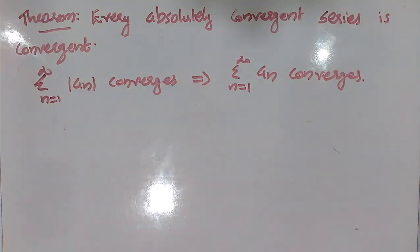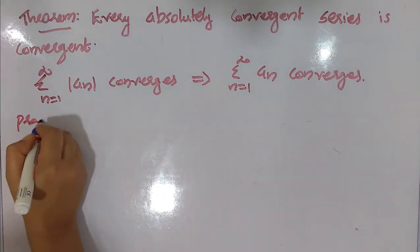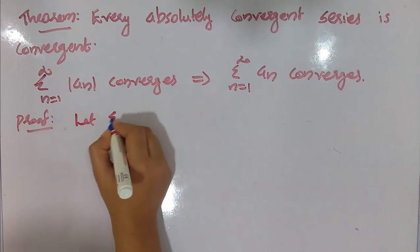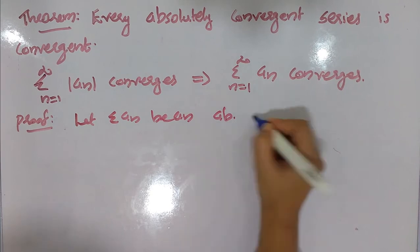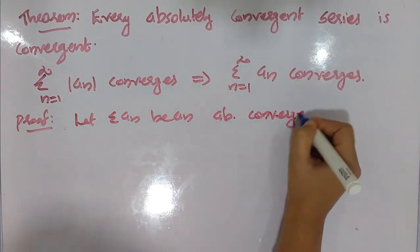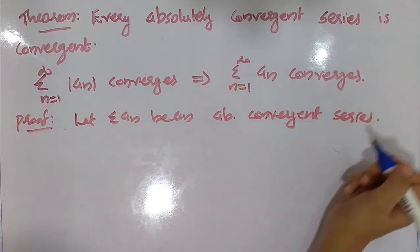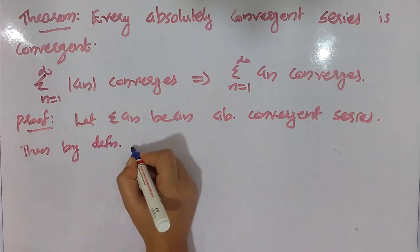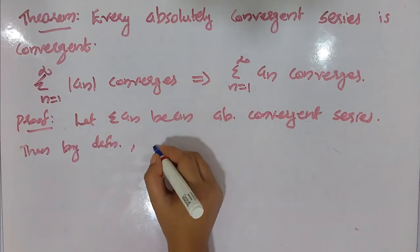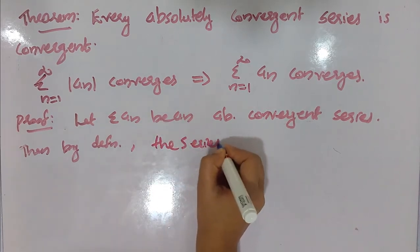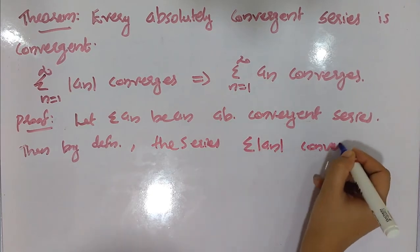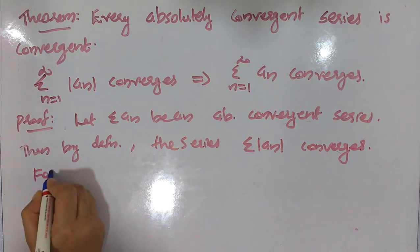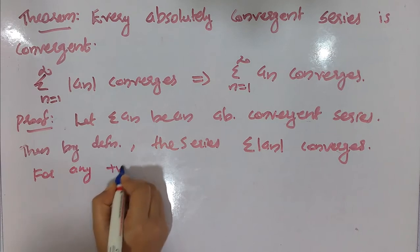Let sigma a_n be an absolutely convergent series. Then by definition, the series sigma mod a_n converges. For any positive integer n, we will try to prove the convergence of sigma a_n.